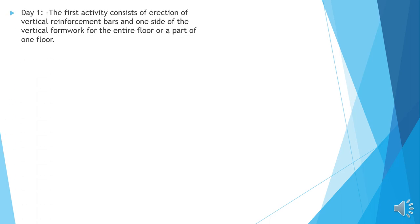Day 1: The first activity consists of erection of the vertical reinforcement bars and one side of the vertical formwork for the entire floor or a part of one floor.